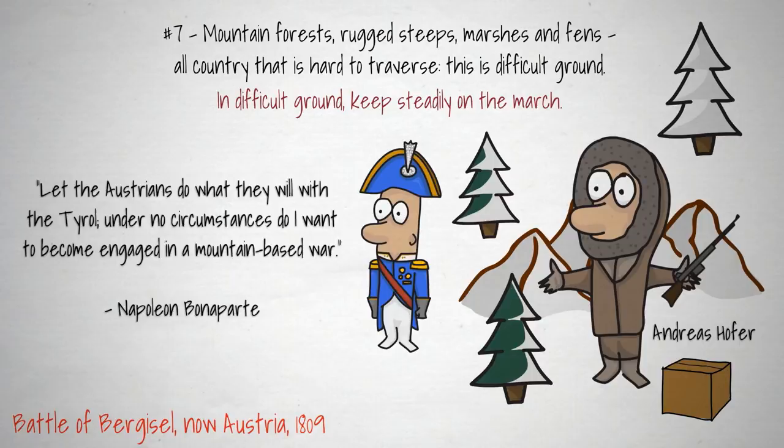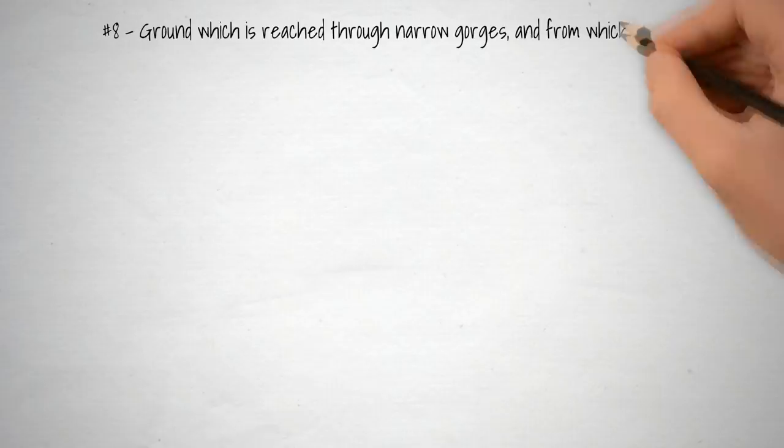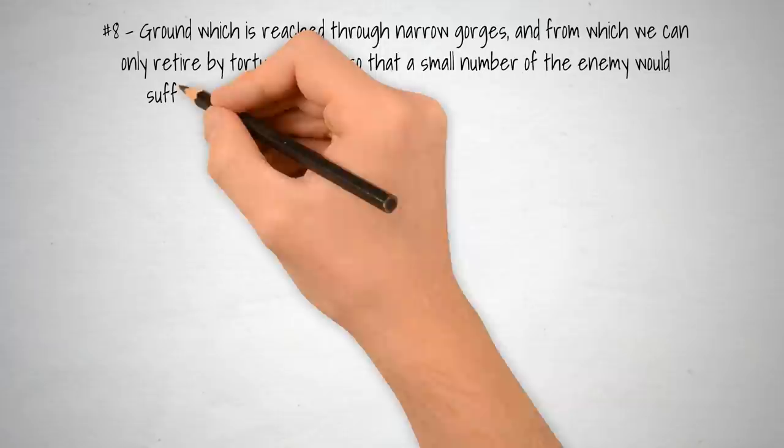Lesson number 8. Ground which is reached through narrow gorges and from which we can only retire by torturous paths, so that a small number of the enemy would suffice to crush a large body of our men — this is hemmed-in ground. On hemmed-in ground, resort to stratagem.